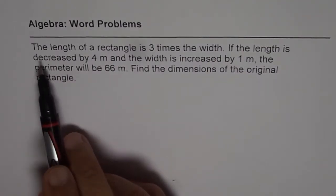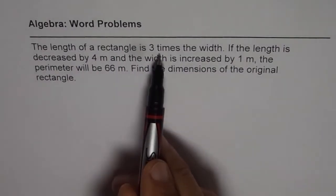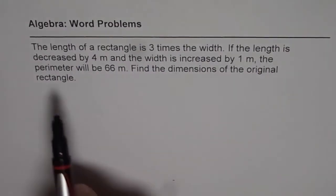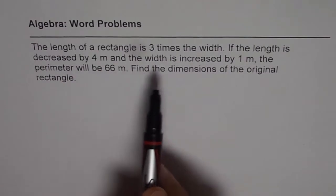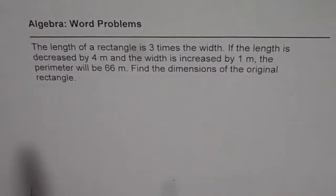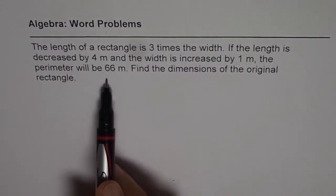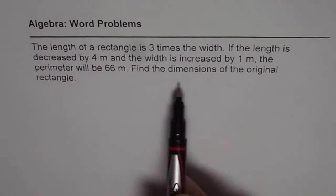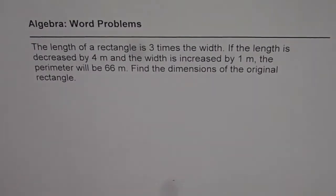The question here is: the length of a rectangle is three times the width. If the length is decreased by four meters and width is increased by one meter, the perimeter will be 66 meters. Find the dimensions of the original rectangle.